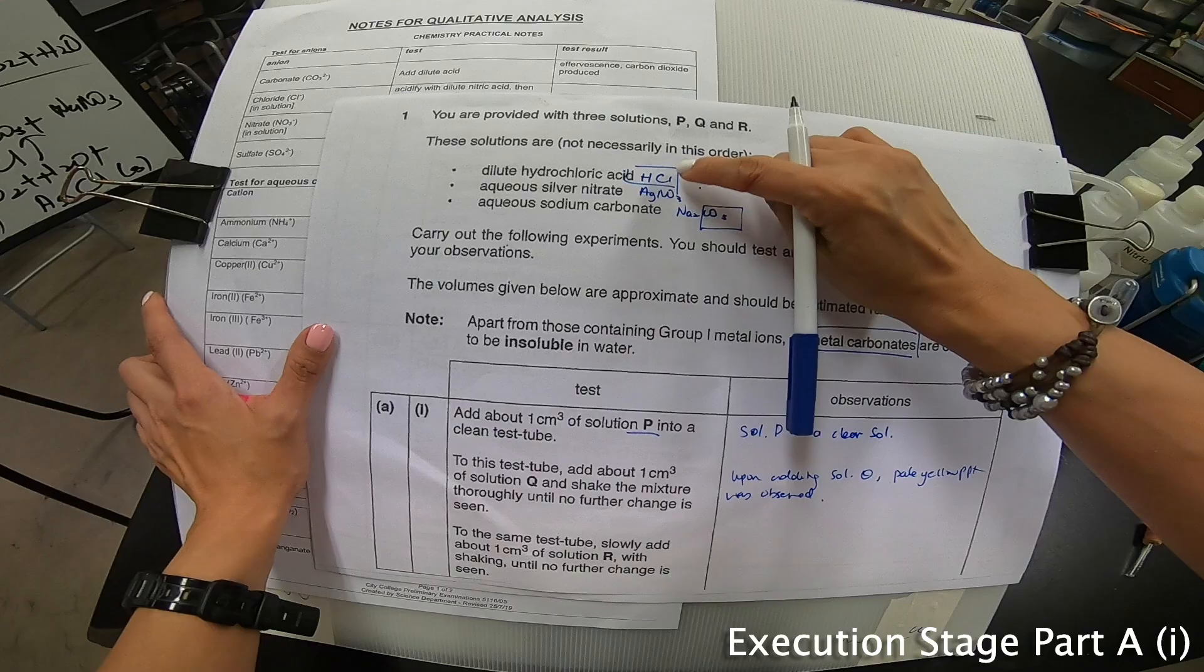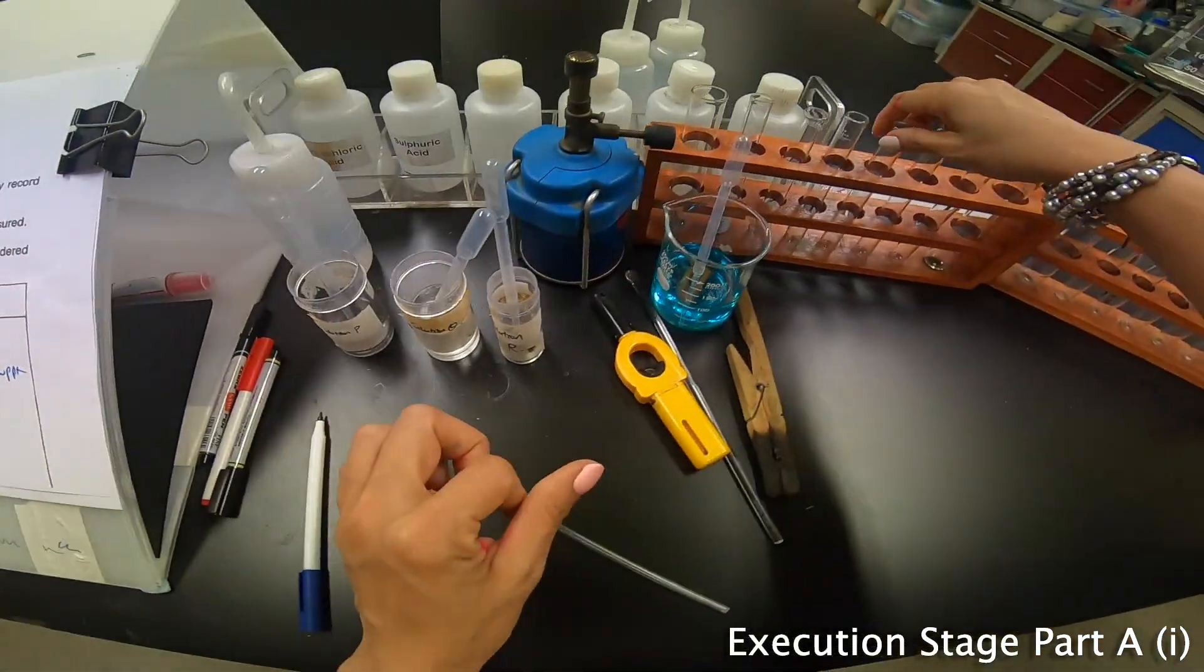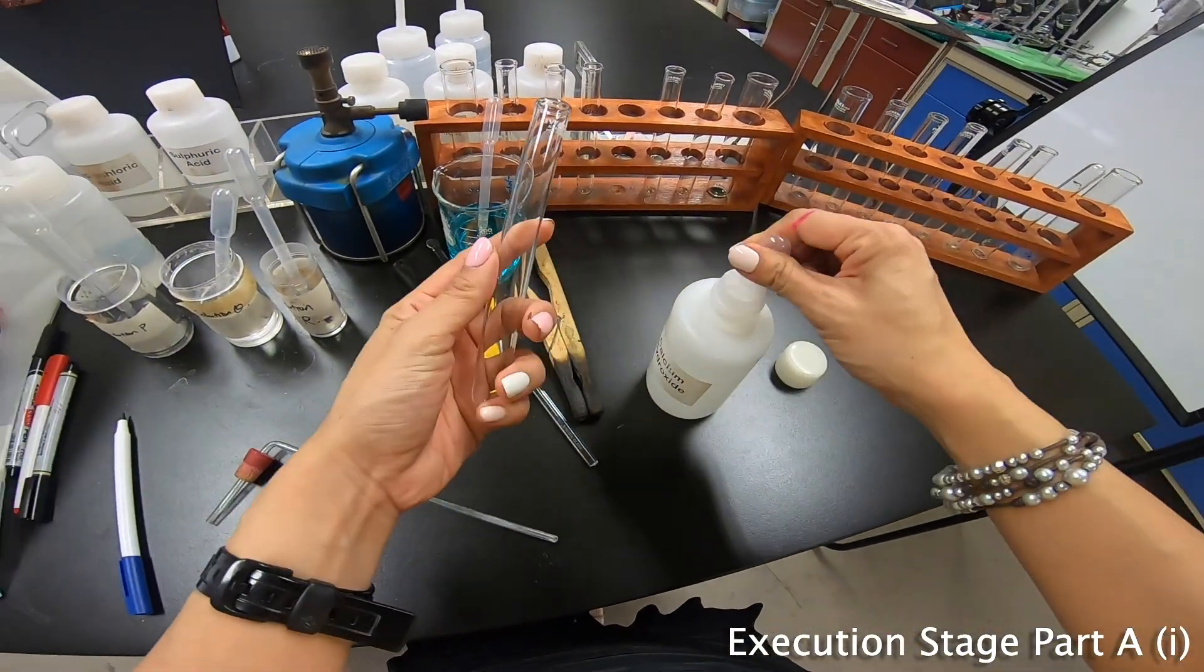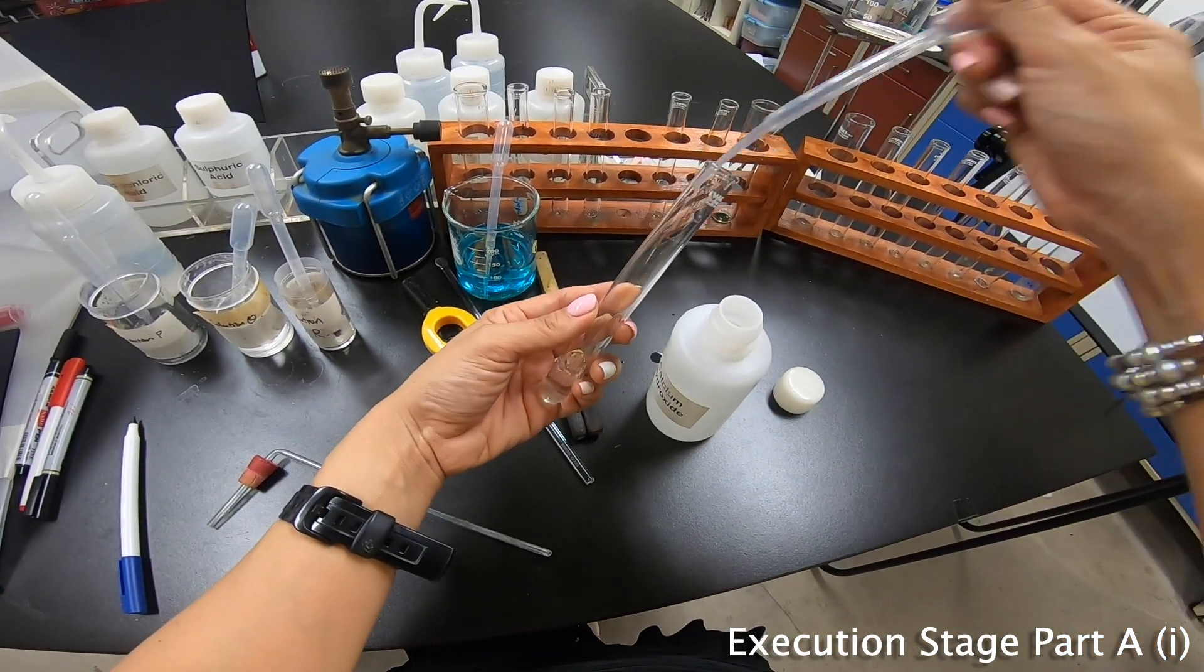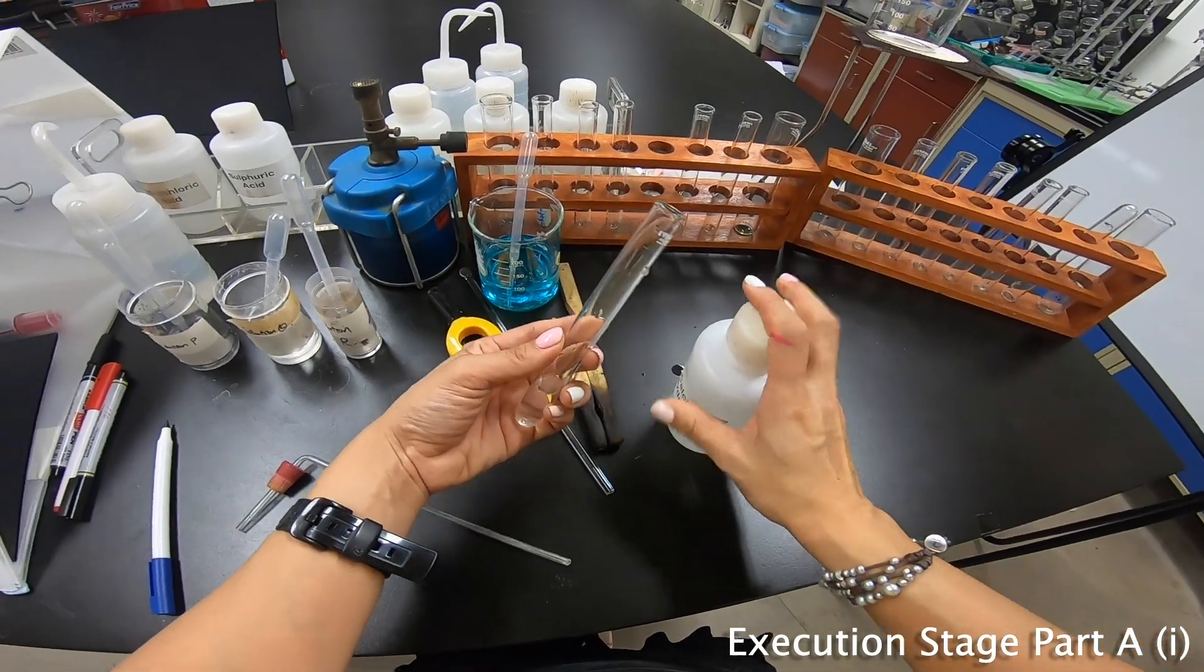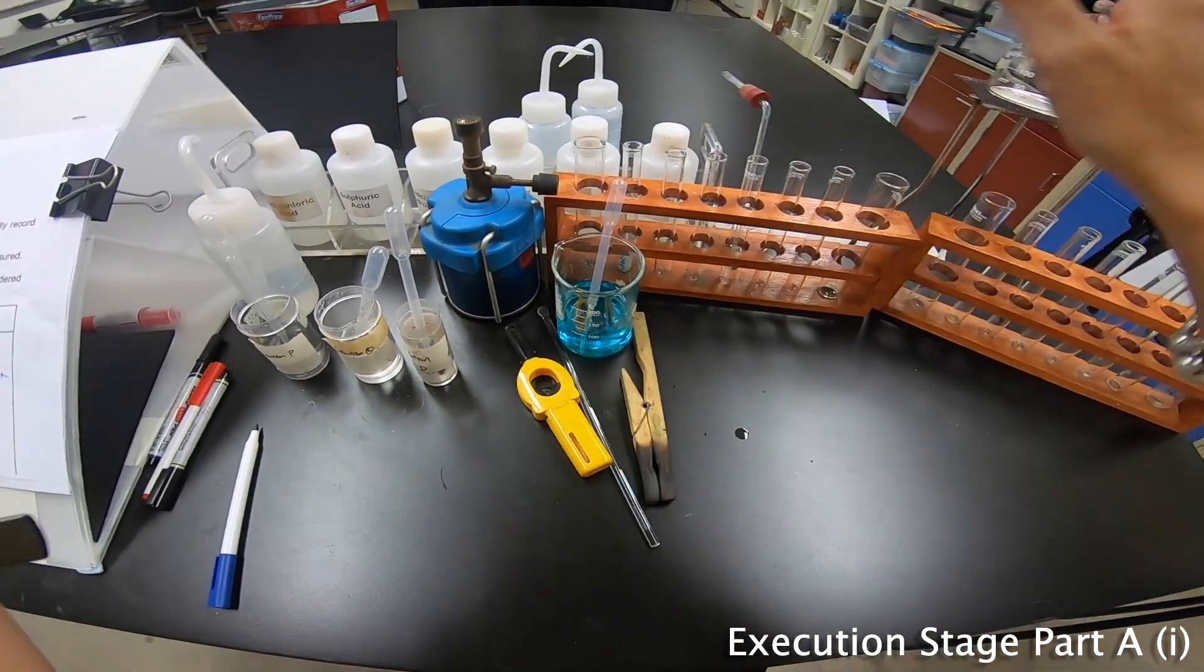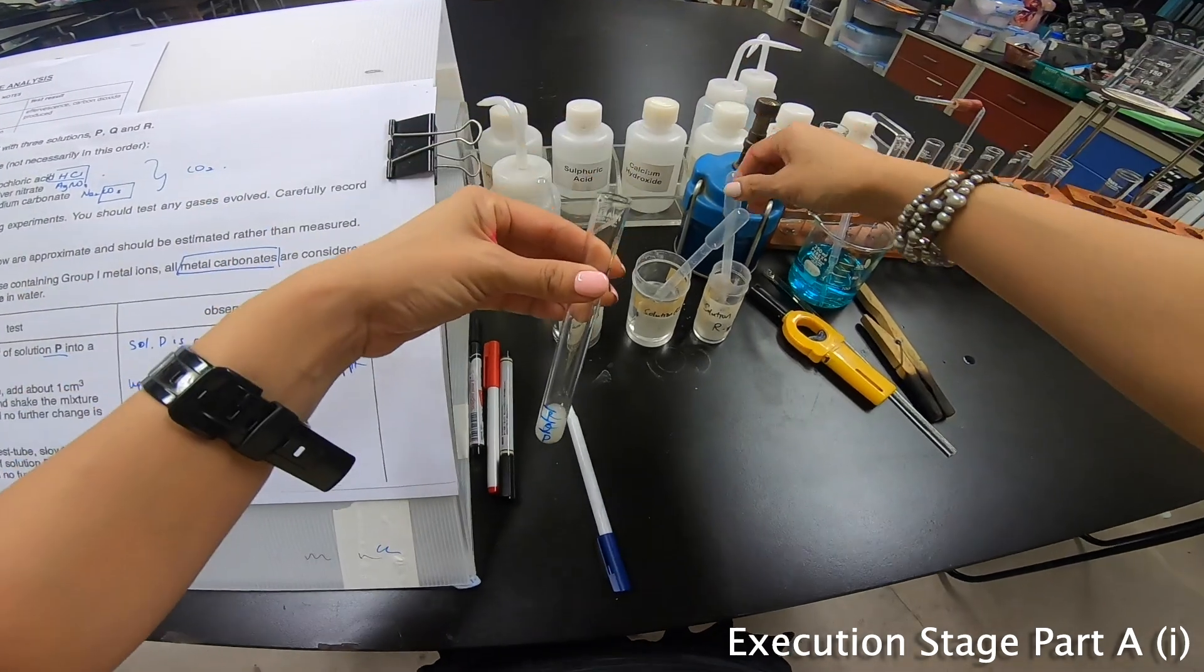Upon adding solution Q, a pale yellow PPT was observed. Now, before I add R, I want to pause for a while. Because I notice here that one of them contain carbonate and one of them contain acid. So whenever acid is added to a carbonate, CO2 is produced. I should have prepared lime water, but it's not too late now. I discover it. So let's quickly prepare our lime water. Prepare it beforehand. Put it at the side. And then, let me put the long tube inside here. Put it at the side here, just in case I see any effervescence, I know what to do.